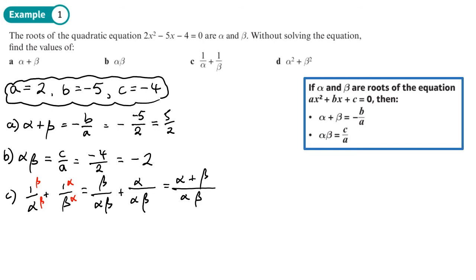If I put those together, I get alpha plus beta over alpha times beta. I've turned it into one of these. That's the method we use. We turn it into an equivalent that involves alpha plus beta. We've already worked out alpha plus beta, that's 5 over 2. And alpha times beta is negative 2. So that's 5 over 2 divided by negative 2, which gives us negative 5 over 4.